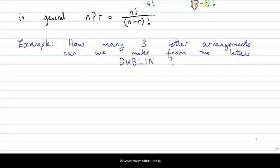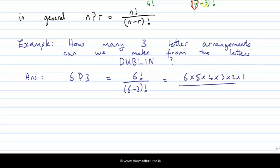Let's finish with an example. We want the number of three-letter arrangements from the letters of the word DUBLIN — those letters are all different, so our formula works. The answer using nPr notation is 6P3, because there are six letters total and we want three-letter arrangements; n is 6 and r is 3. That equals 6 factorial divided by (6 minus 3) factorial, which is 6 times 5 times 4 times 3 times 2 times 1, divided by 3 factorial (3 times 2 times 1). The 3, 2, and 1 cancel, leaving 6 times 5 times 4. Six times five is 30, times four gives 120. So the answer is 120. That's how we use factorials to calculate numbers of arrangements.